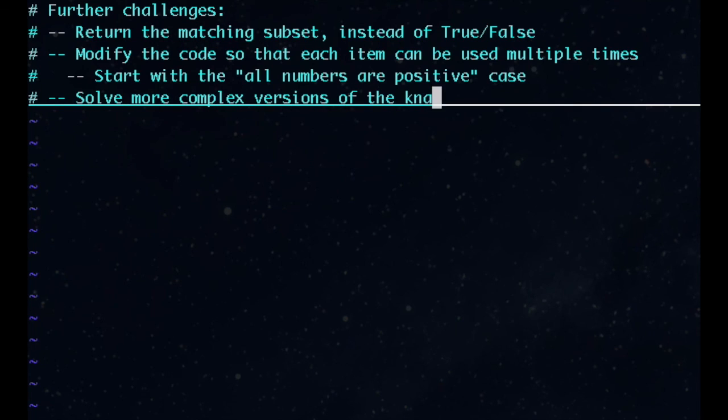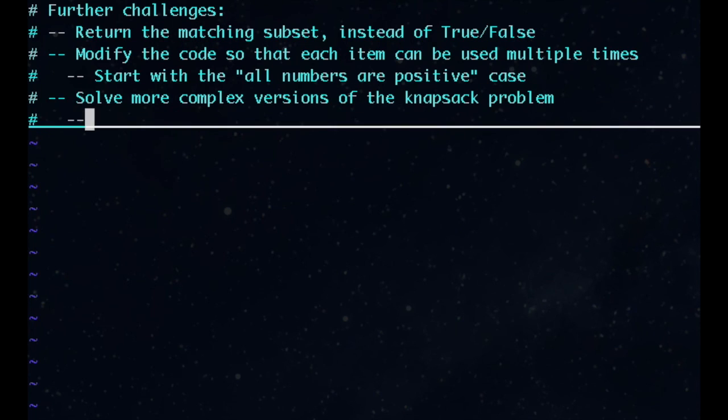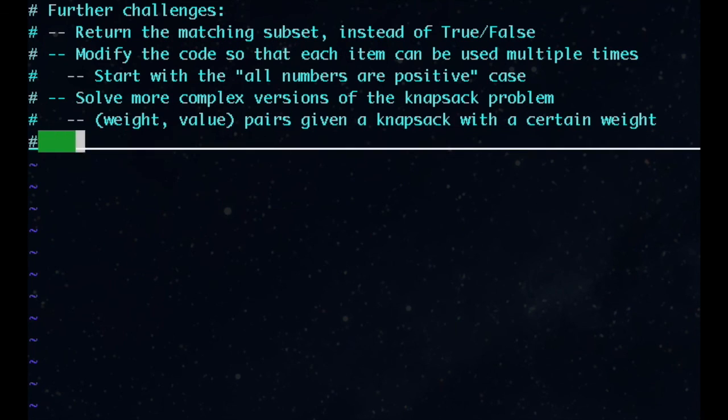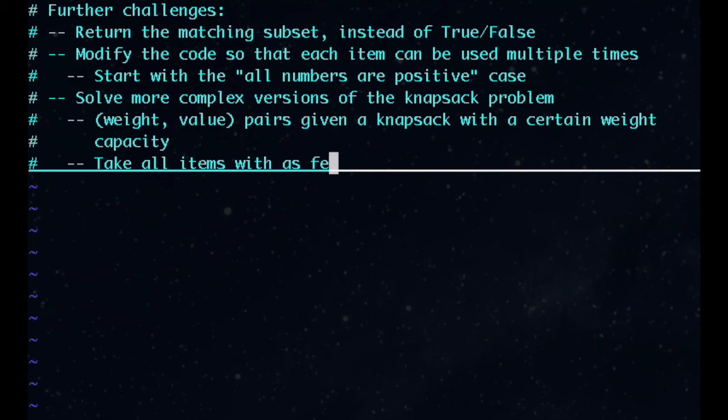Finally, there are more complex versions of the knapsack problem. For example, there's a version where items have weights and values, and you want to maximize the value you take for a given weight. Or you might try a version where you take all the items with as few knapsacks as possible. This is called bin packing.